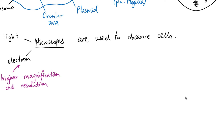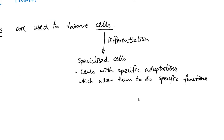The body is made up of lots of different organs, which are made up of tissues, which are finally made up of cells. Every single cell is specialized to do a very specific function. The process of cells becoming specialized is called differentiation, and once cells become differentiated, we call them specialized cells. Specialized cells are cells with specific adaptations — a technical term meaning specific features, characteristics, or structures — which allow them to do specific functions.